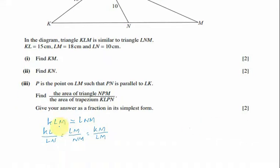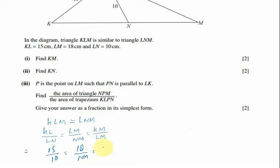Now I put in the values. KL is 15, LN is 10, and LM is given as 18. NM is not given, and KM is also not given, so we have to find KM. LM is 18.